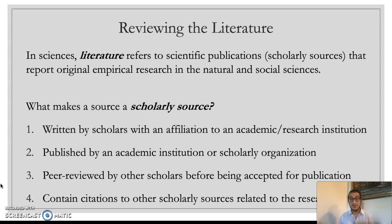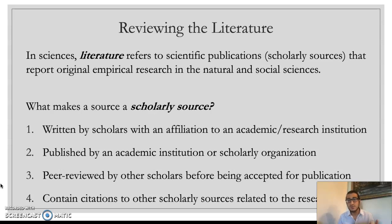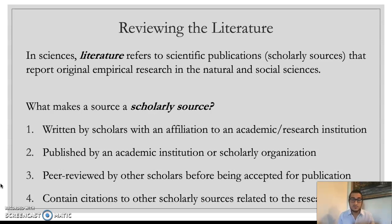This is often called a works cited, reference page, or bibliography at the end of every scholarly source. Scholarly sources published in a journal typically cite anywhere from 20 to 100 other published scholarly sources — academic journal articles, academic books, etc. For example, the paper I'm working on about bisexual marriage has close to 100 sources cited, proving that I've read all of this research and am informed by previous work conducted in this area, demonstrating that I know what gaps exist and what my research is trying to address.